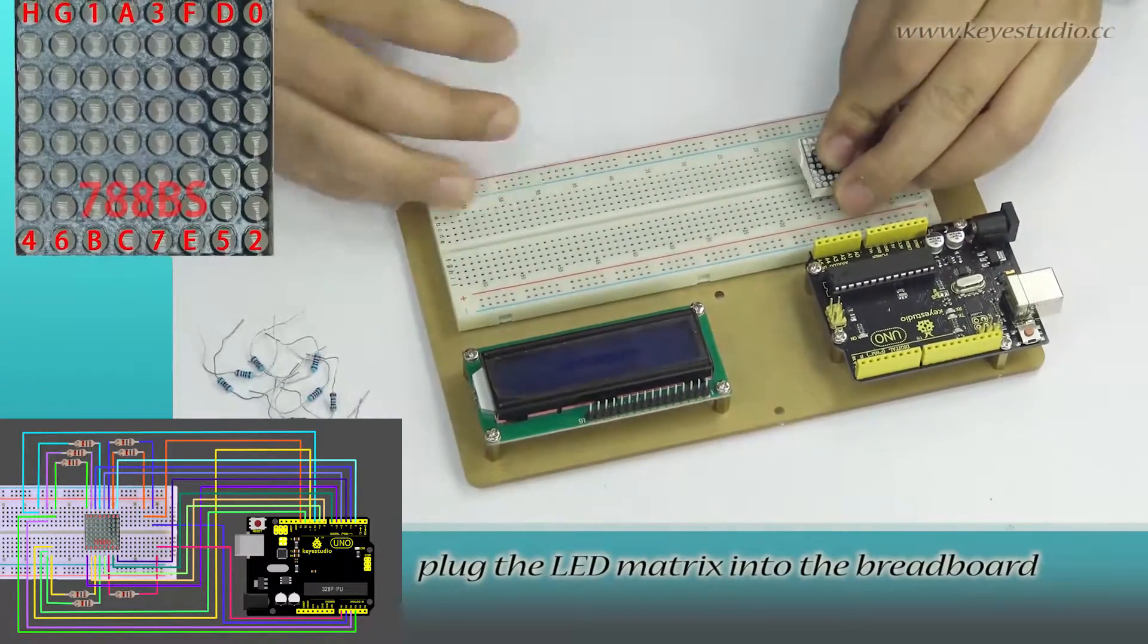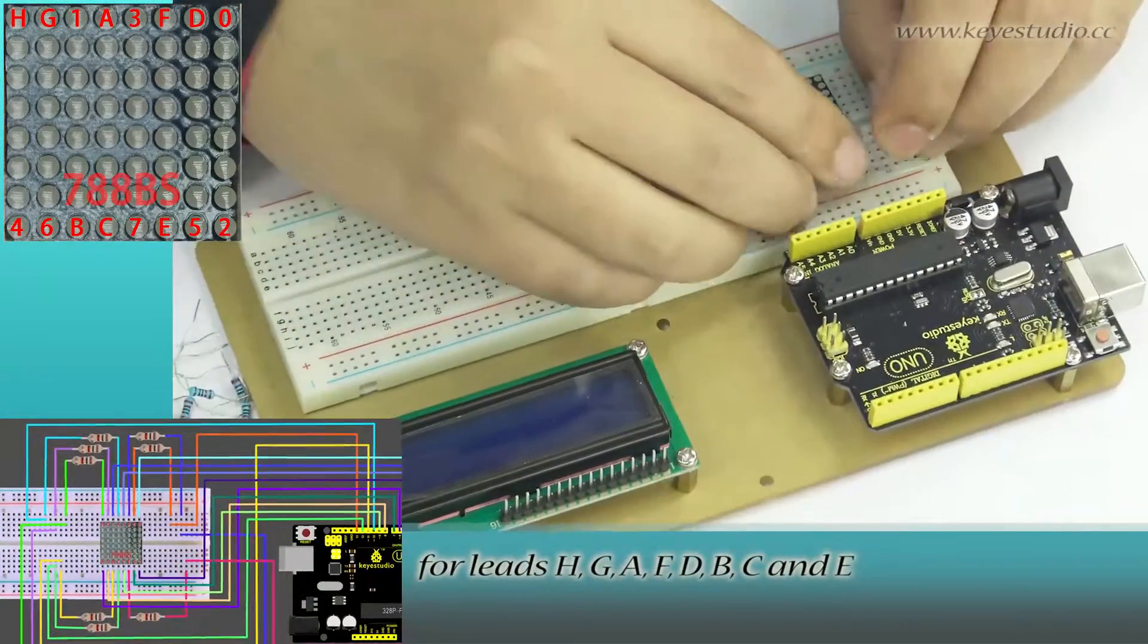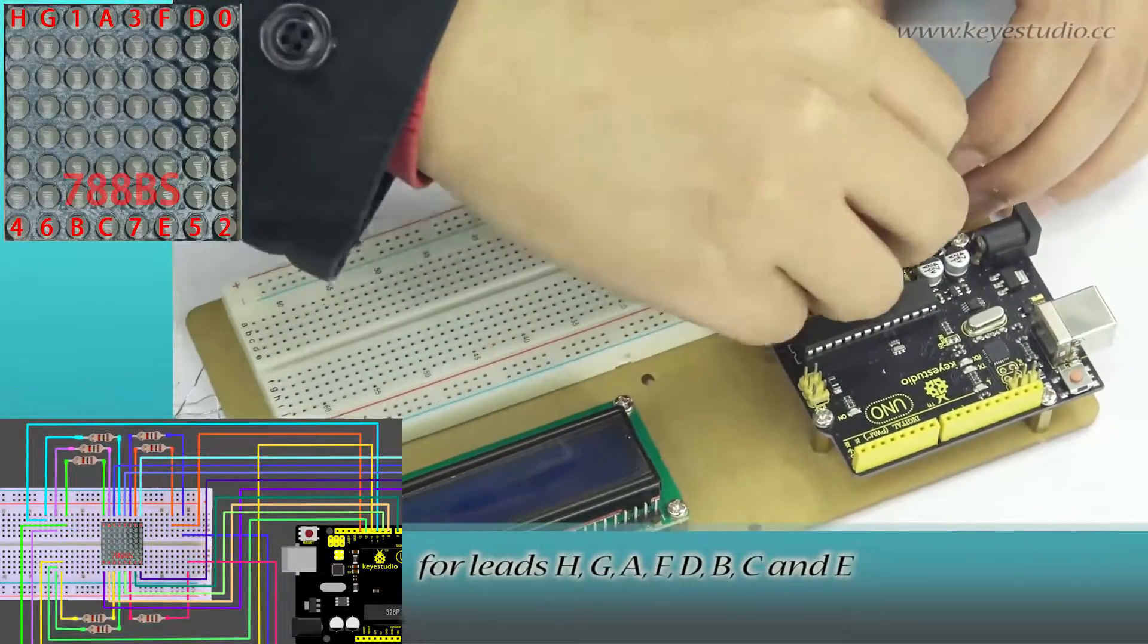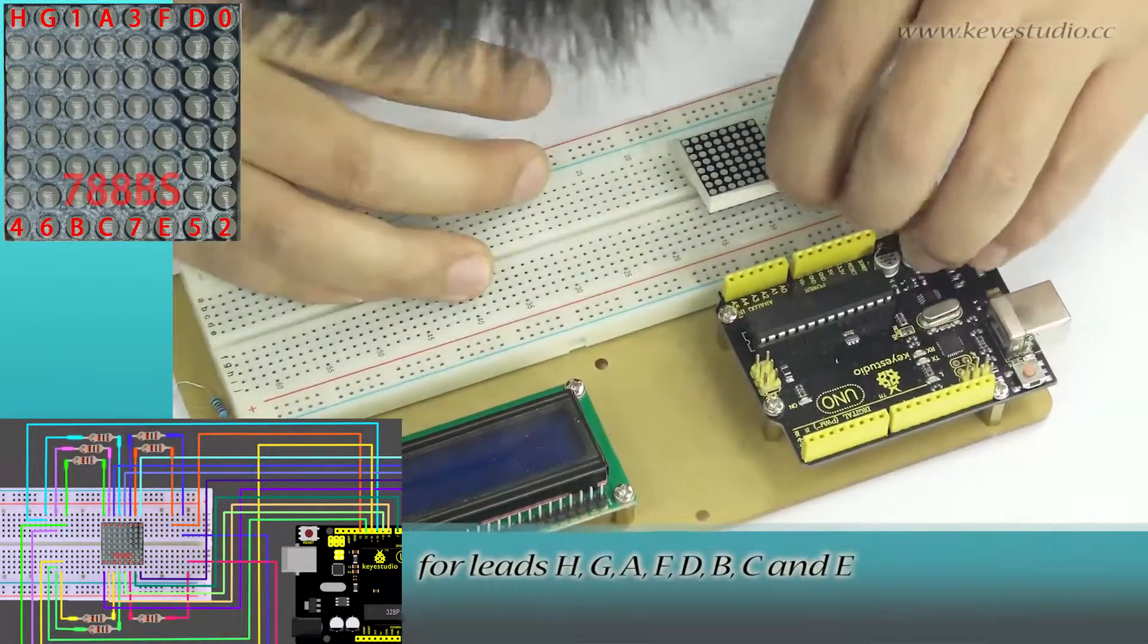Plug the LED matrix into the breadboard. For leads H, G, A, F, D, B, C, and E,